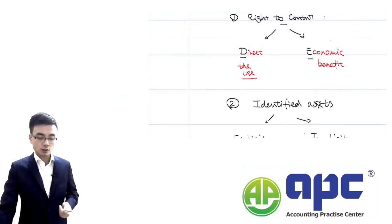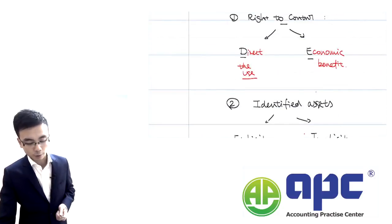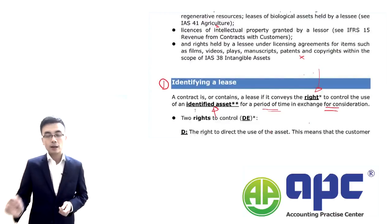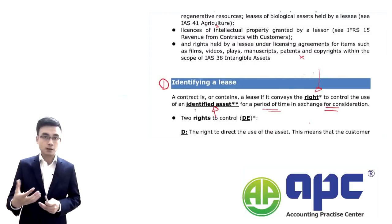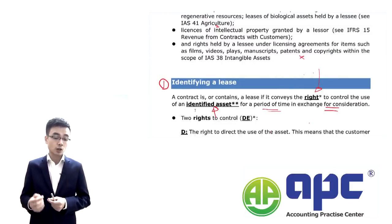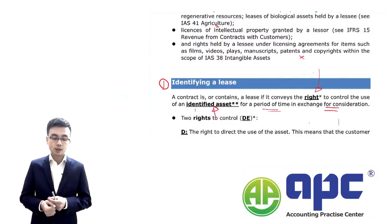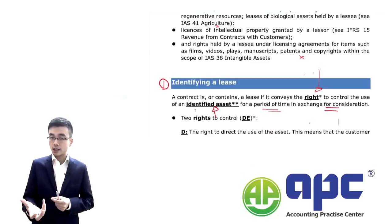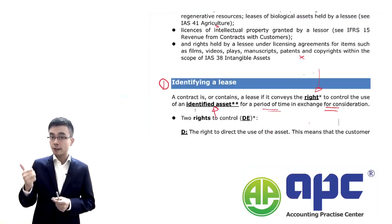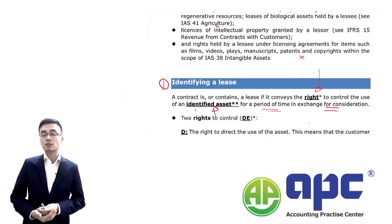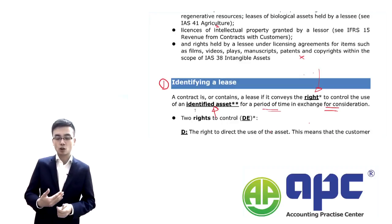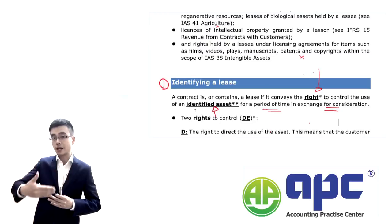So if you go through these two criteria, we can confirm that this lease contract is indeed a lease contract. A lease contract contains a lease if: first, it conveys the right to control the use of an asset; secondly, the asset should be identified; and hence we should determine that it's for a period of time and also in exchange for consideration, which means payment.